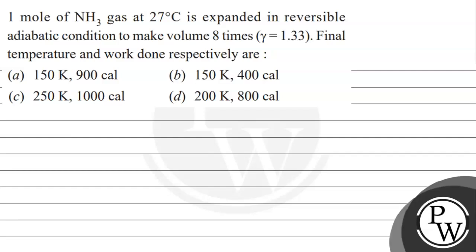Let's read this question. 1 mol of ammonia gas at 27 degrees Celsius is expanded in reversible adiabatic conditions to make the volume 8 times. Gamma is equal to 1.33. Find the final temperature and work done respectively in R. These are the following options given to us.